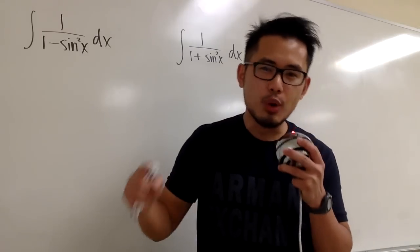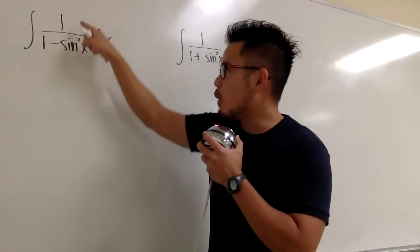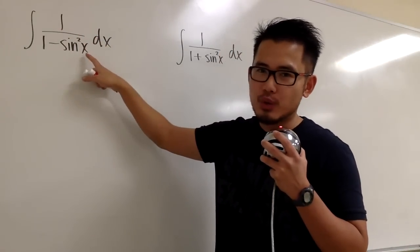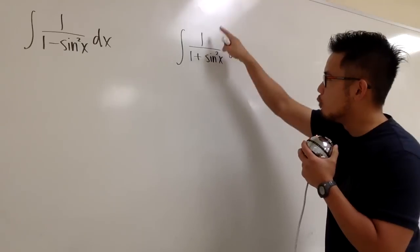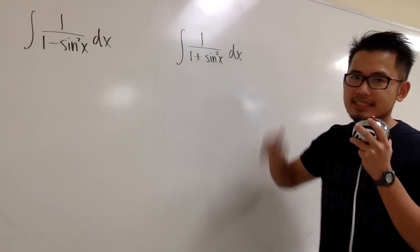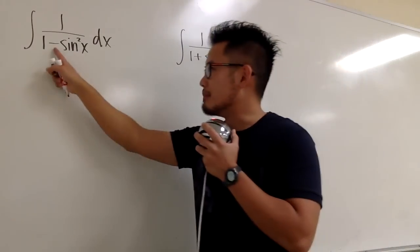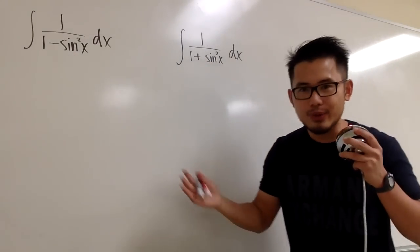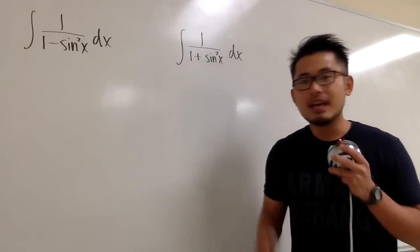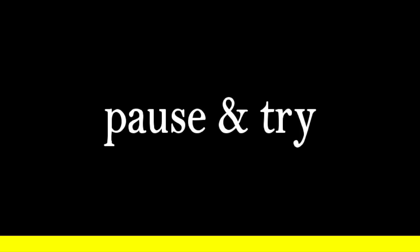Here is another integral battle. The first one is the integral of 1 over 1 minus sine squared x. The second one is the integral of 1 over 1 plus sine squared x. This one has a minus, this one has a plus. So what do you guys think? As usual, pause the video and try them out.